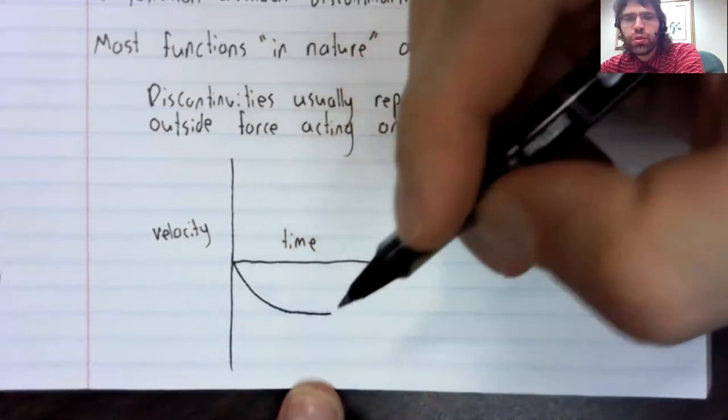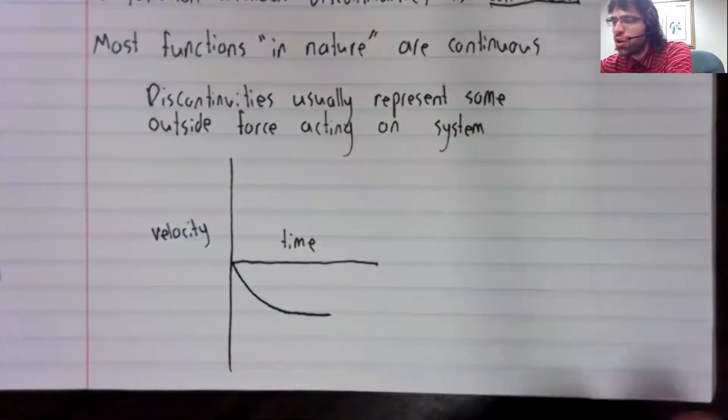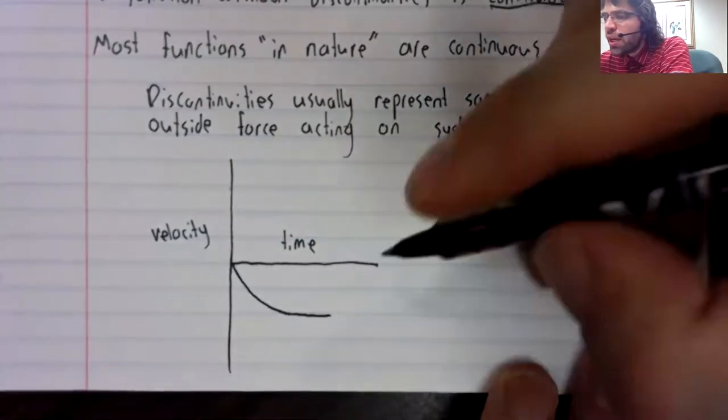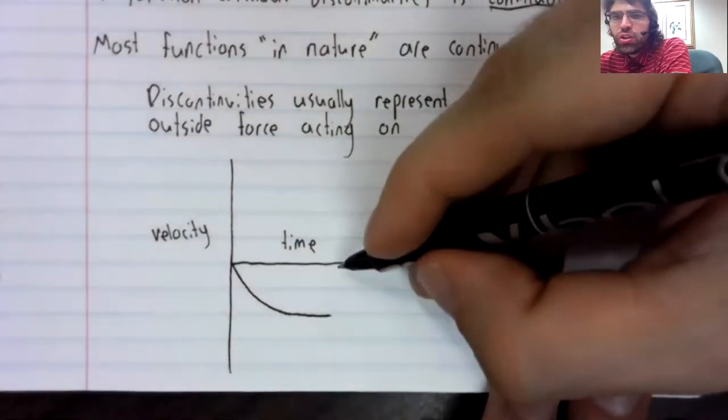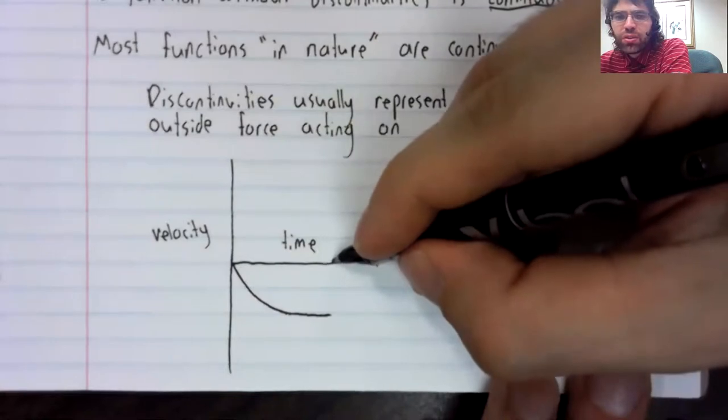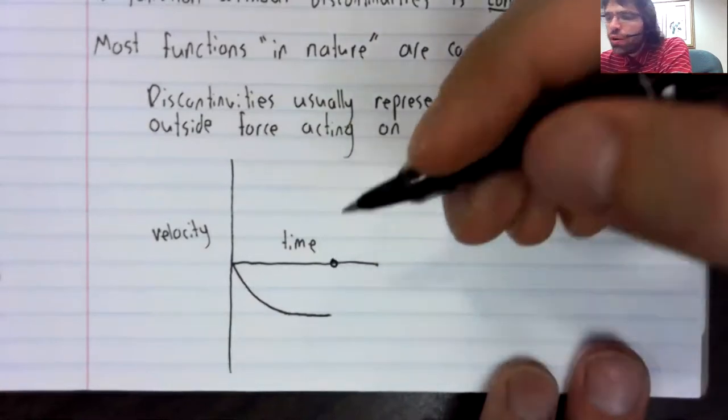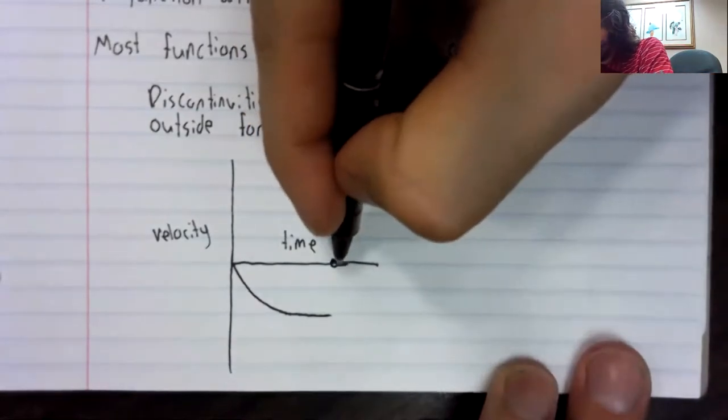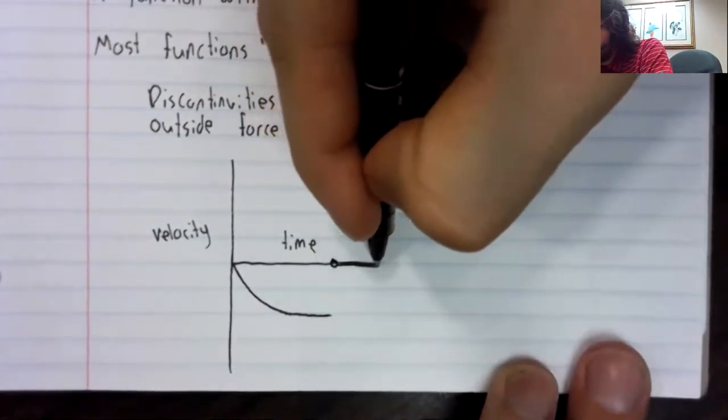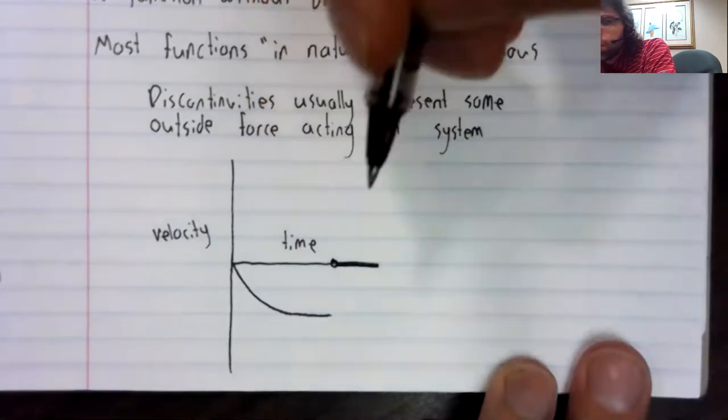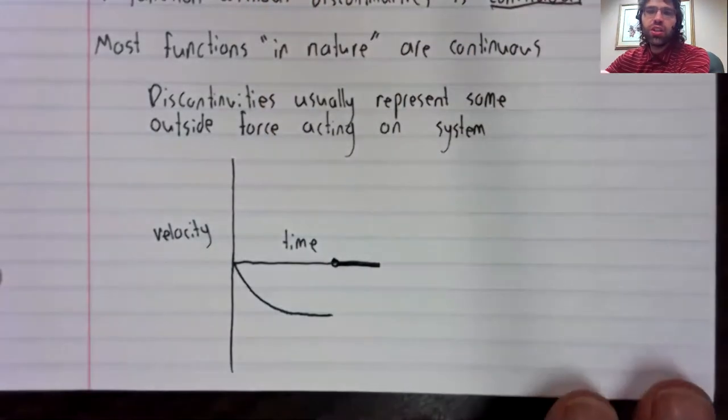You see it's approaching a terminal velocity. And then when a discontinuity happens, that is to say, when the object hits the ground, its velocity will be zero.